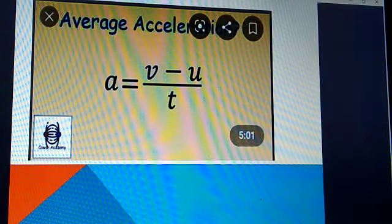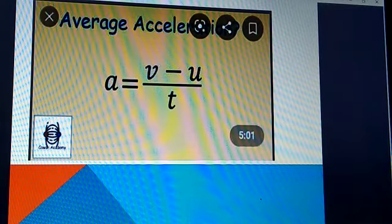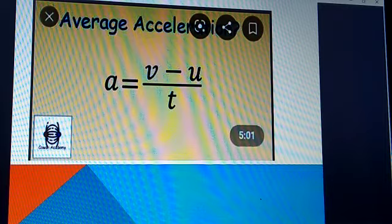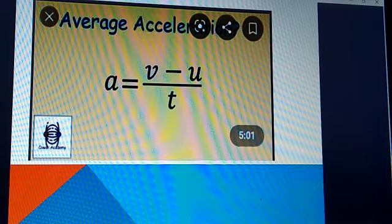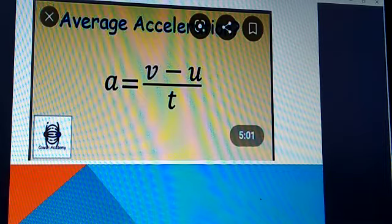Acceleration a, small letter a equal to v minus u upon t. Small letter a denotes acceleration, v denotes the final velocity, and u denotes the initial velocity.